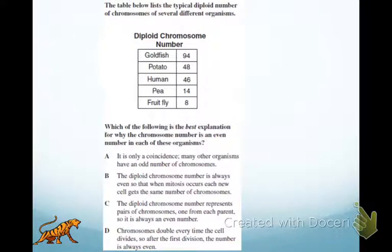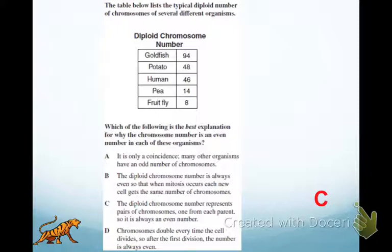The table below lists the typical diploid number of chromosomes of several different organisms. Which of the following is the best explanation for why the chromosome number is an even number in each of these organisms? The diploid chromosome number represents pairs of chromosomes from one parent, so it's always going to be an even number. That's why humans have a diploid number of 46, but our haploid number is 23 — we have 23 pairs of chromosomes.